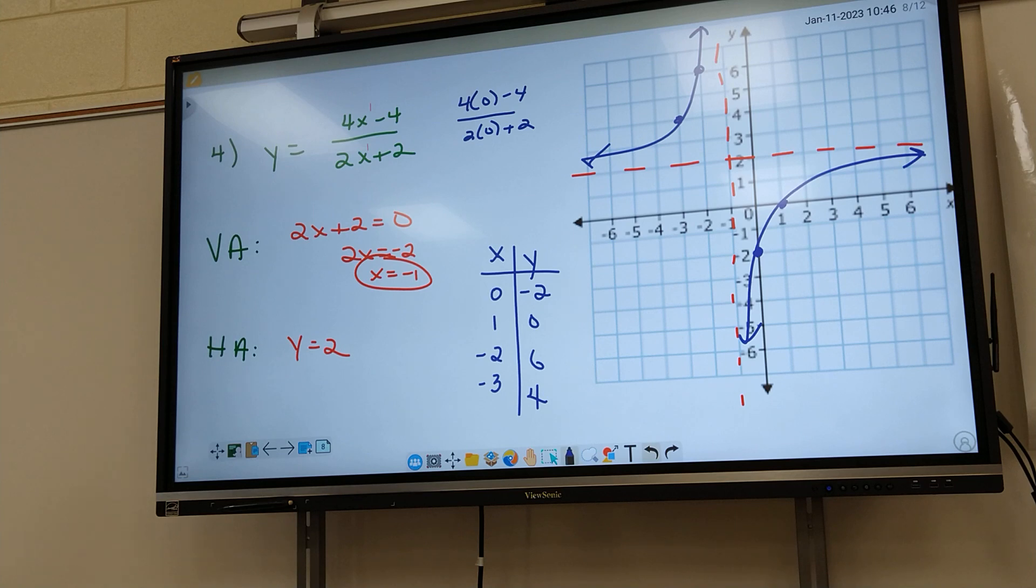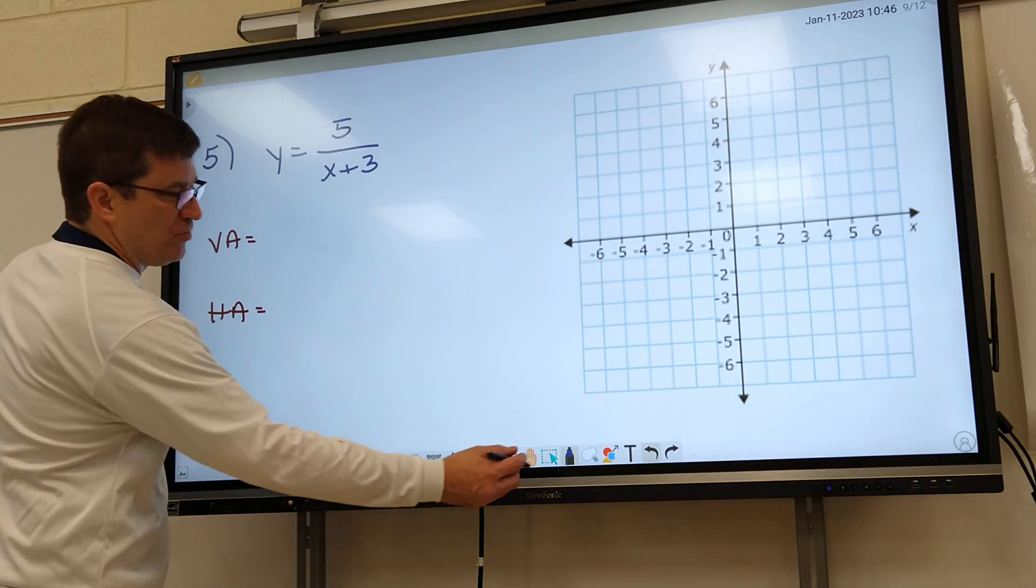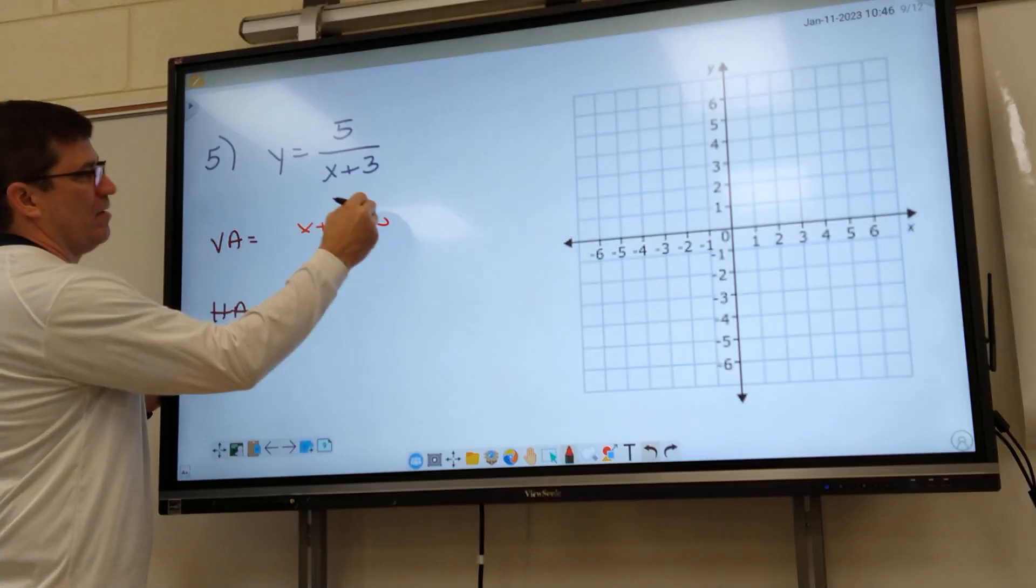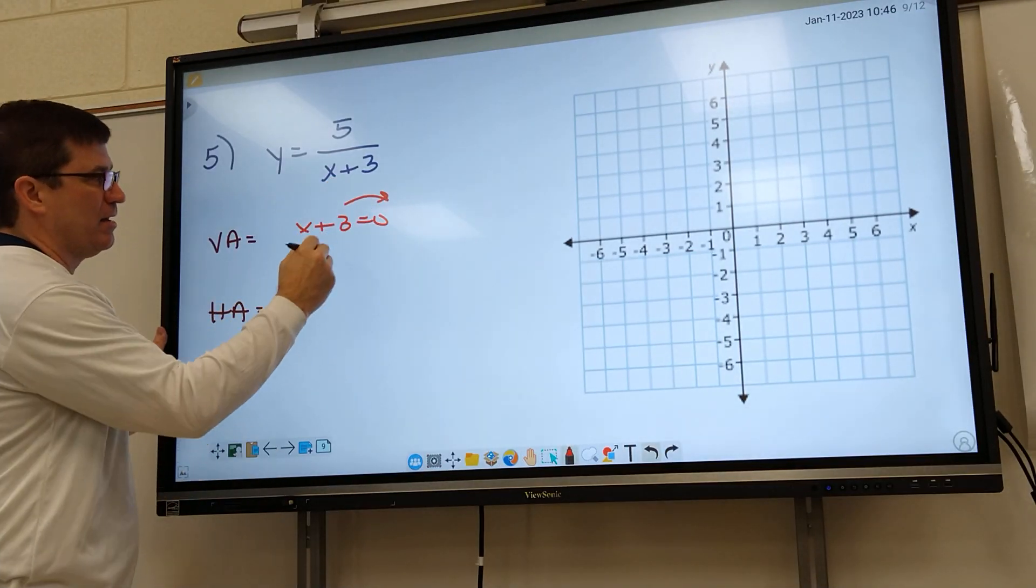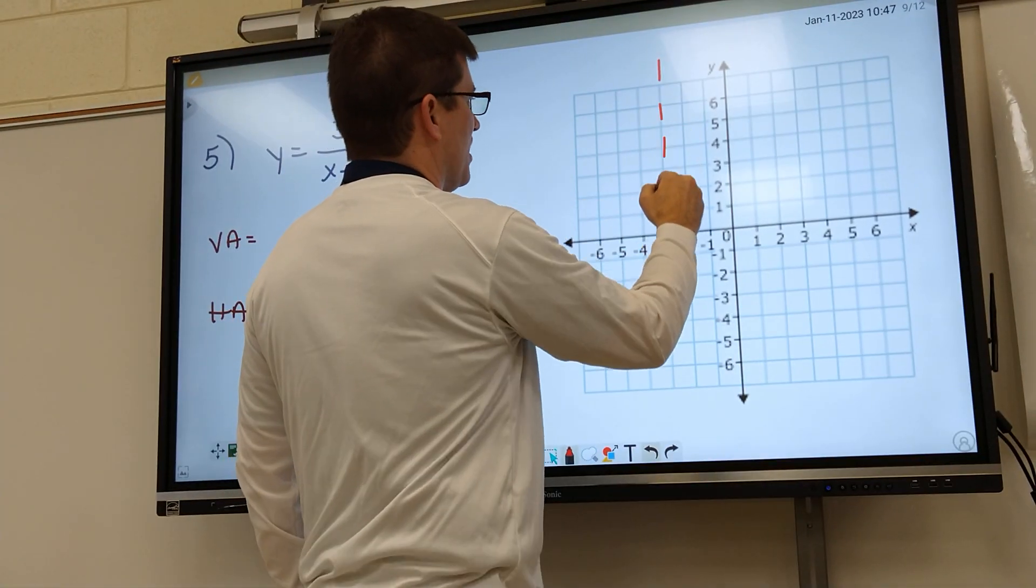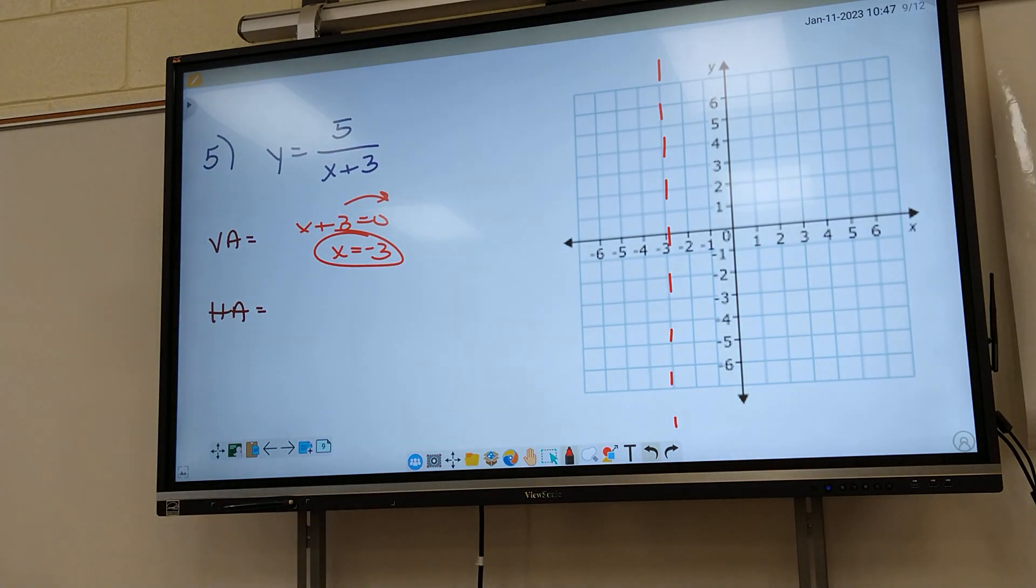Let's go to number five. Five is a little bit different, but we're going to follow the same process. So y'all just let me know how do we find the VA. Set the bottom equal to zero. What's that answer going to be? I got x plus 3 equals zero. Move over my three. What do I got? Negative three. So go to negative three, put a dotted line. That should be really easy. Everybody should be able to find the VA.